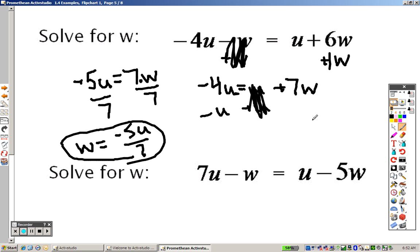Same concept over here. To get W by itself, I'm going to show you can do it another way here. What if I added 5W to this side? It doesn't matter which way you go, as long as you get all the W's on the same side, right? So I have 7U, that's a 4W, and that's a U.